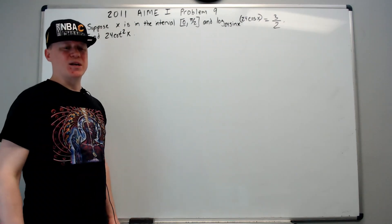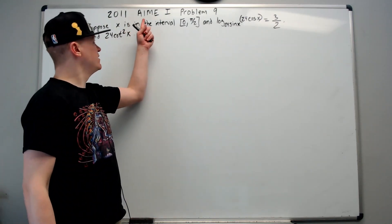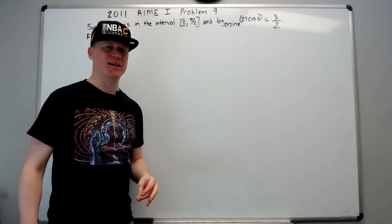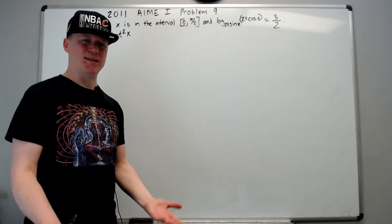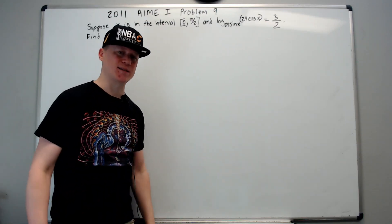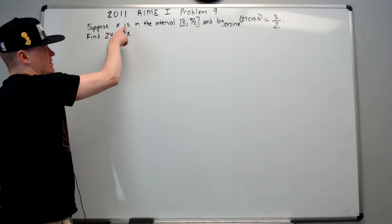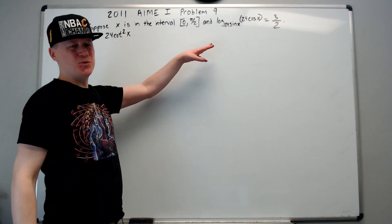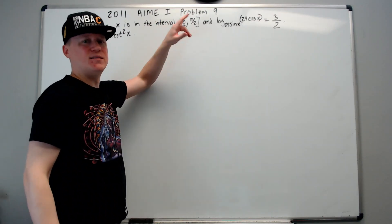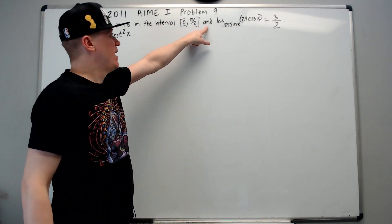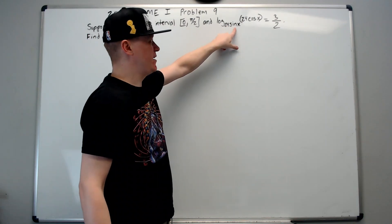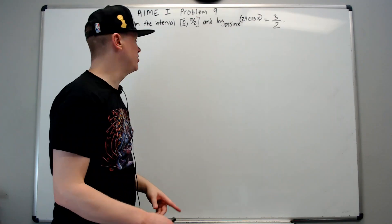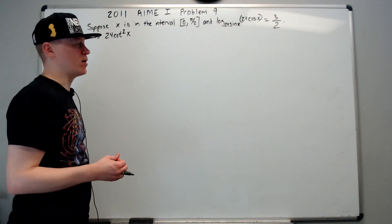This problem is done by request. This is the 2011 AMC 1 problem number 9. I do intend to go back later and do the earlier problems, but I'm just getting these ones out of the way because they were requested. Suppose x is in the interval 0 to pi over 2 — mentally translate: first quadrant. The log base 24 sine of x of 24 cos of x equals 3 over 2. Find 24 cotangent squared of x.